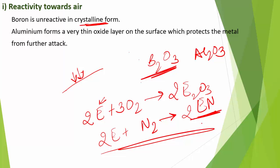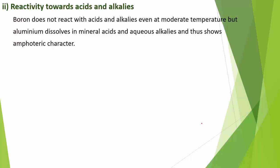The nature of these oxides varies down the group. Boron trioxide is acidic and reacts with basic metallic oxides to form metal borates. Aluminium and gallium oxides are amphoteric, while indium and thallium oxides are fully basic in nature.